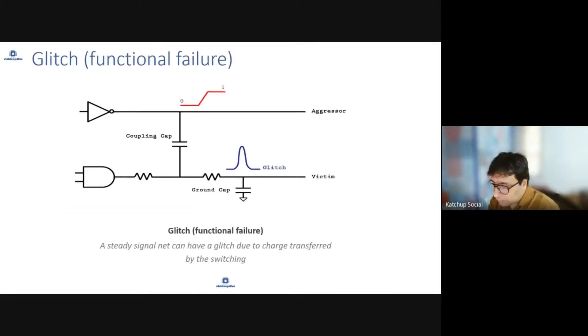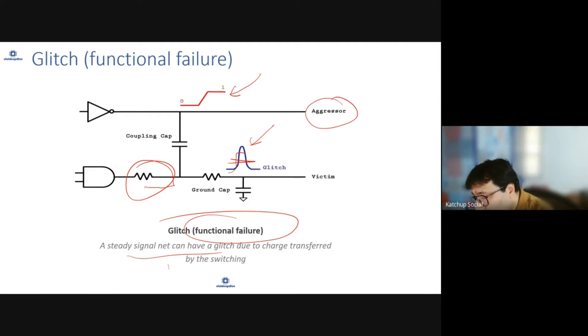Then you can have another case where this signal is changing, but this signal was not changing at all. In that case, this coupling capacitance can introduce some glitch in this. It can cause the signal to change for a small amount of time. This can cause functional failure—a signal can have a glitch. One aggressor signal can cause a change in the signal which was not changing at all by switching, and that can cause glitch failure. STA also checks for this. This is known as functional failure because functionally this signal should not have changed, but now it's changed.